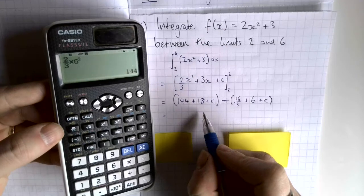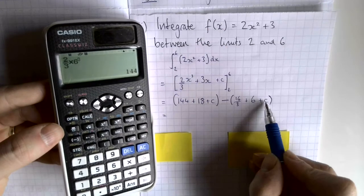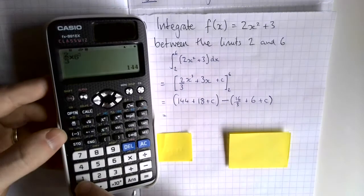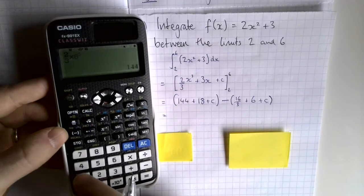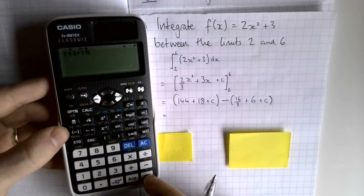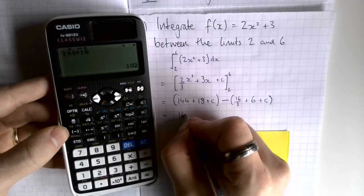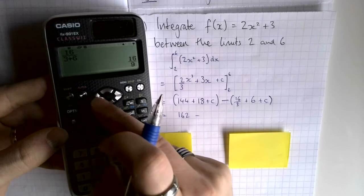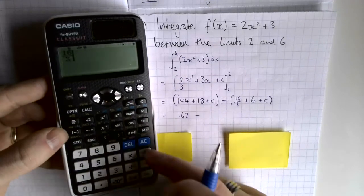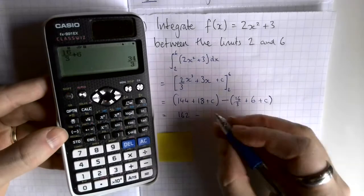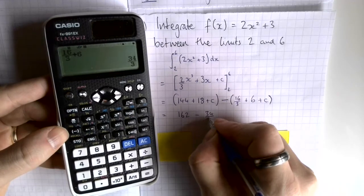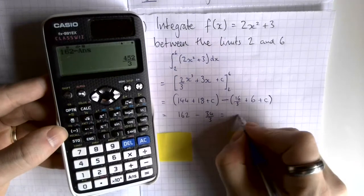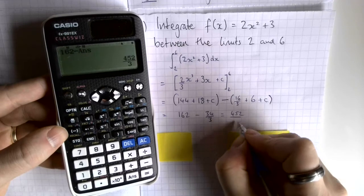Notice the c minus c cancels, so that doesn't matter — we don't need to know what it is. So it's 144 plus 18 for the first bracket, minus (16/3 plus 6) for the second. 16/3 plus 6 is 34/3. So 162 minus 34/3 gives 452/3.